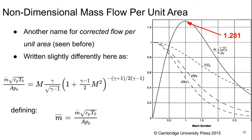And we can write this a little bit differently here. So it's the mass flow times the square root of CPT0 over AP0. And this is a function of Mach number and Gamma. It's a non-linear function.